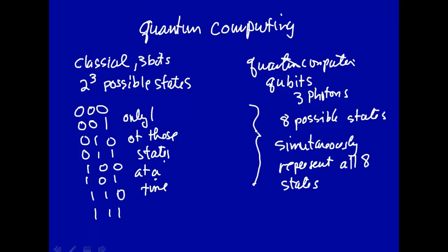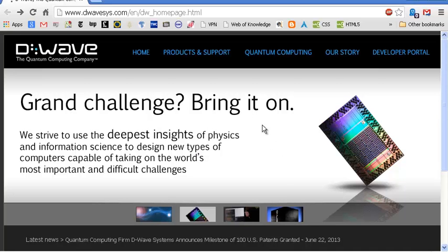So 512 qubits, that means you have 2 to the 512 possible states that can be represented simultaneously. If you try to have a 512-bit classical computer, that's a huge number of states, and you'd have a huge amount of memory to represent that. But in a quantum computer, all you have to do is have 512 qubits, and you can represent 2 to the 512 different states simultaneously, and it works.